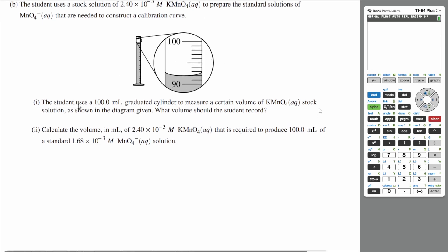If you look at part (i), the student uses a 100 mL graduated cylinder to measure a certain volume of potassium permanganate stock solution as shown in the diagram given. What volume should the student record?